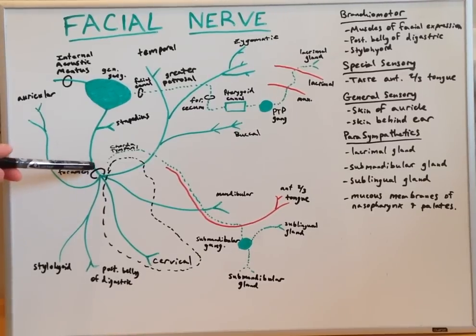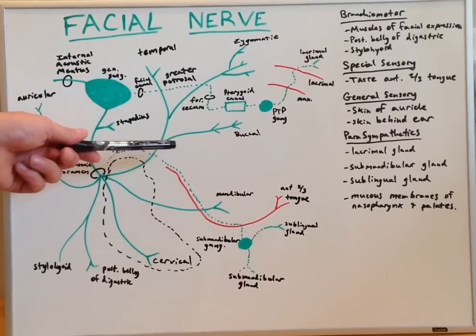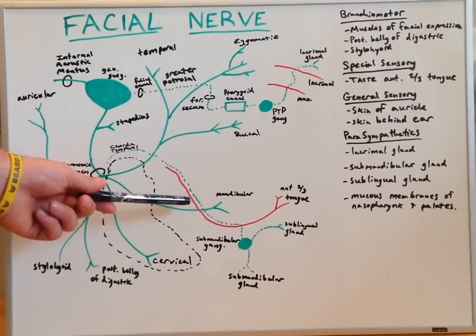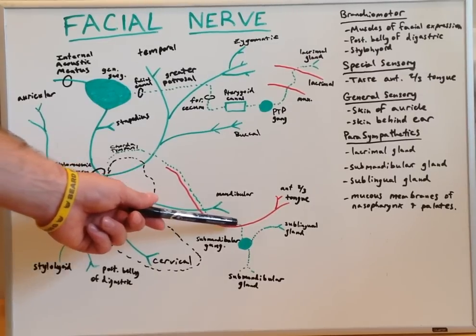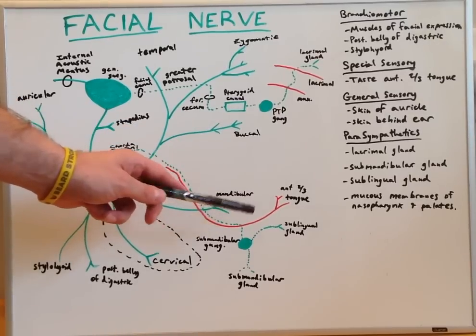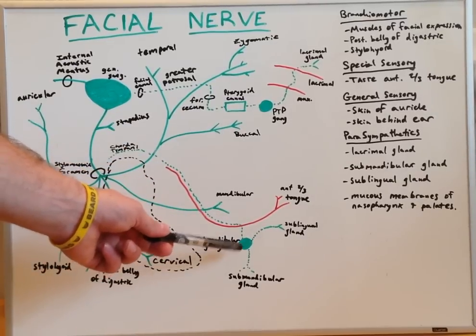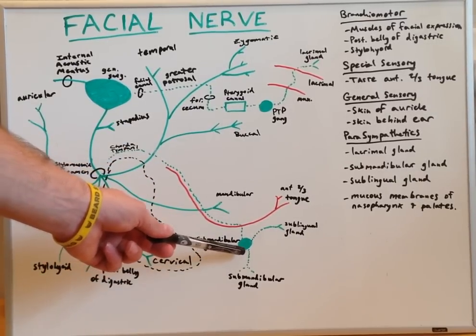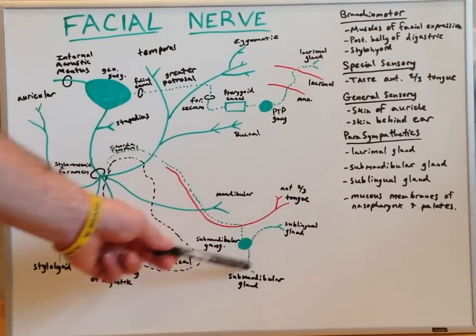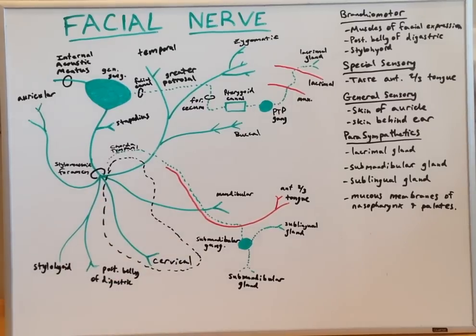The chorda tympani, shown with dotted lines indicating parasympathetic fibers, follows along and hitches a ride with the lingual nerve, continuing on to supply taste to the anterior two-thirds of the tongue, as well as passing into the submandibular ganglion, where it innervates the sublingual and submandibular glands for secretion.